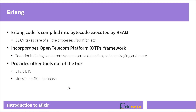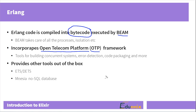Erlang code is compiled into special byte code that is executed by the BEAM virtual machine. What's important is that Erlang is not just a language to code applications — it's like a whole development platform with many additional tools and features incorporated. Specifically we have access to a framework called Open Telecom Platform, or simply OTP. Despite the name it has nothing to do with building telecom systems — it's a multi-purpose framework containing lots of various tools, for example to build concurrent systems, to perform error detection, to recover from errors, to package code, and to manage applications.